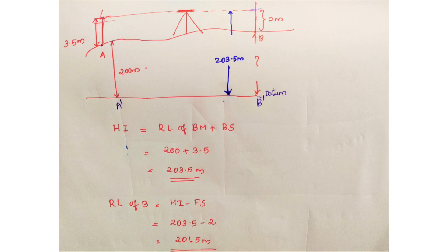If you want to set the height of instrument, reduce the level of the line of sight. You set the telescopic axis to an imaginary horizontal line — that line is the elevation height of instrument. The height of instrument equals the height of the point, and then we set the height of the line of sight.